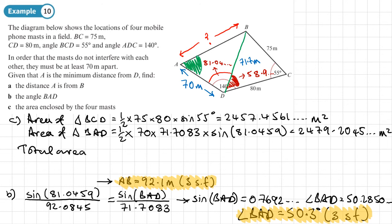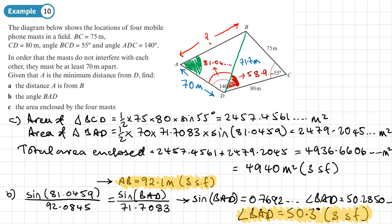So then the total area enclosed is basically just going to be the sum of those. So the 2457.4561 plus 2479.2045. Let's see what that gives us. That's 4936.6606 meters squared. So we want to round that to a suitable degree of accuracy. So again, three significant figures, or we could do it to the nearest meter squared. To three significant figures then that would be 4940 meters squared, and that's three significant figures.